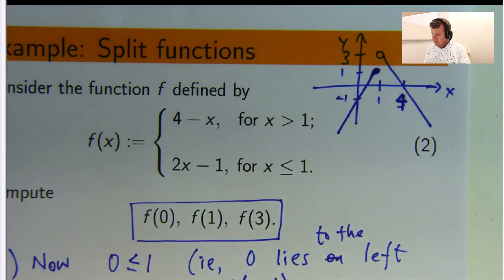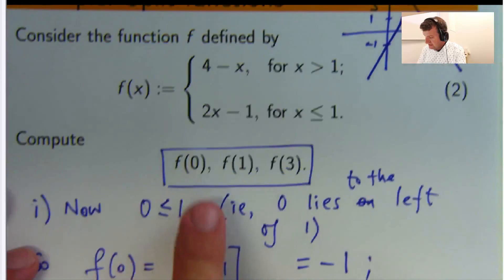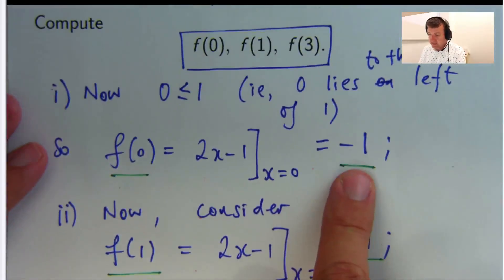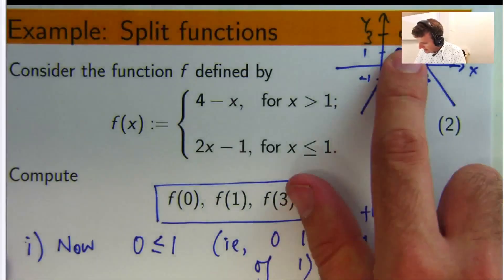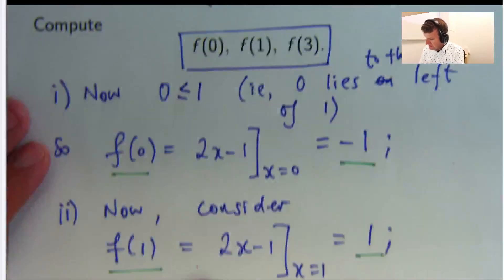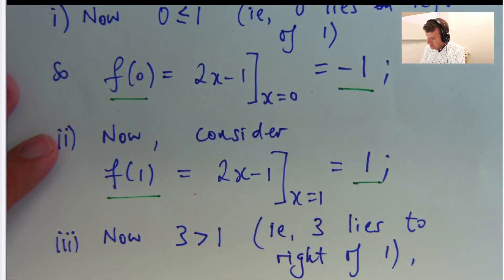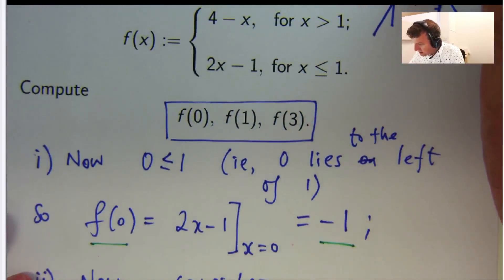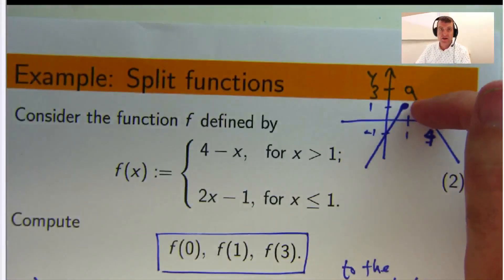So, let's just make sure that that actually aligns with our answer, at least intuitively. f of 0, well, that's just there. That should be negative 1. Yes. f of 1, that looks like it's 1. Yes. f of 3, that looks like it's heading down to 1 there. So, I think we're ok.